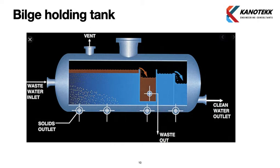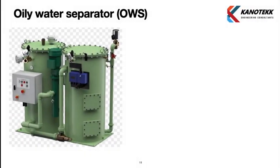The bilge holding tank, also known as the skimmer tank, is used for storage of bilge water. Inside the bilge holding tank, baffles are installed to separate fluids of different density — water, being denser, settles to the bottom, while oil, being less dense, rises to the upper part. This separation occurs naturally within the bilge holding tank. From here, suction is taken to the oily water separator.